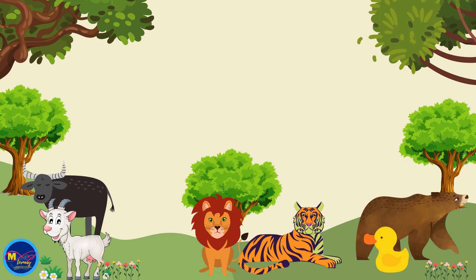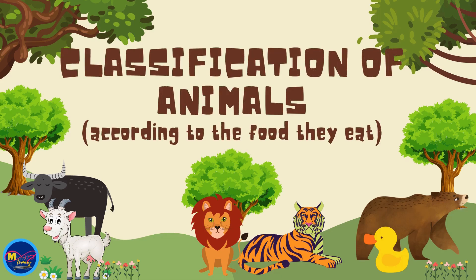Classification of animals according to the food they eat: Herbivores, Carnivores, and Omnivores.